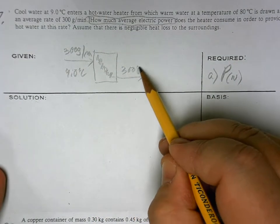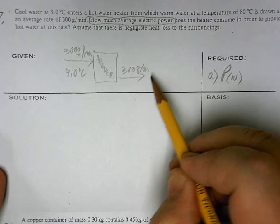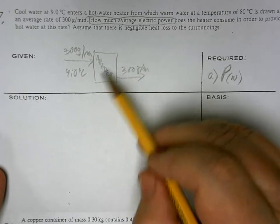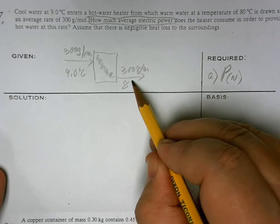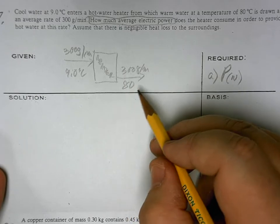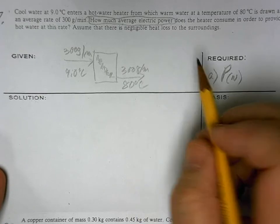And it leaves at 300 grams per minute. You have to do it both so that you know if there's any accumulation going on or if it's steady state. Steady state means that nothing is being accumulated - everything that comes in goes out.